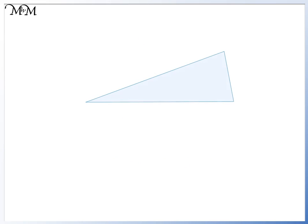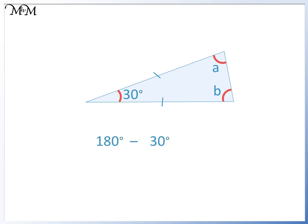Here's another example. a and b are the same size. We know that one of the angles is 30 degrees, so we can begin by subtracting it from 180 degrees. 180 take away 30 equals 150.